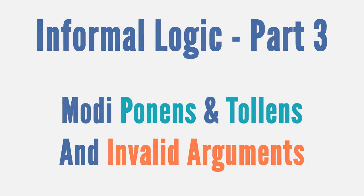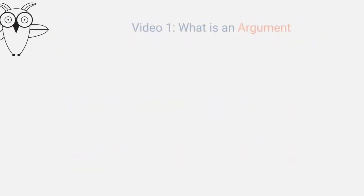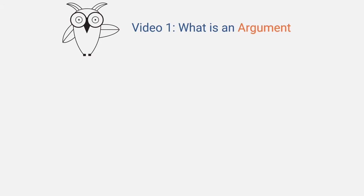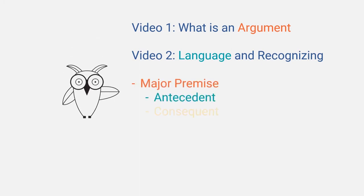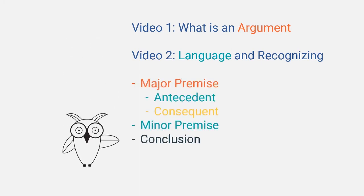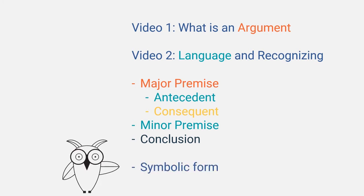Hello and welcome back to Solomon's Cave. In the logic series we first explored the nature of an argument and saw that it consisted of at least two premises and one conclusion. Then in the second video we explored the forms of the major and the minor premises, how they are supposed to relate to each other, what kind of conclusions could be reached, and how to write both the premises and the conclusion in symbolic form.